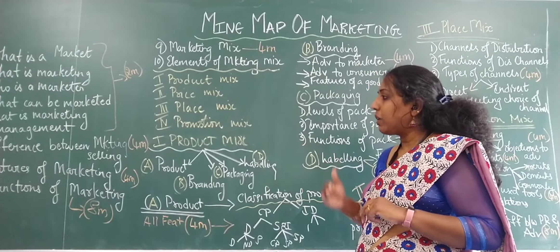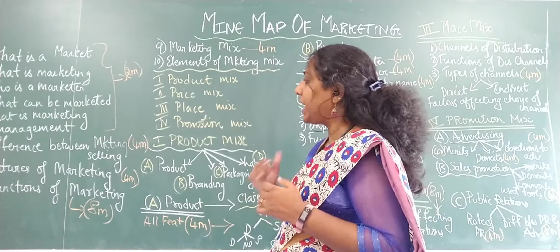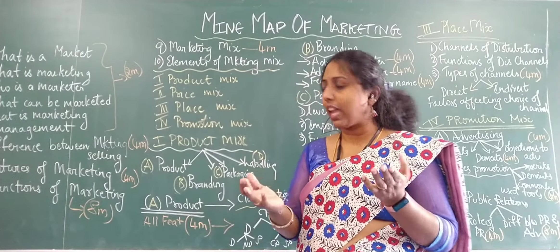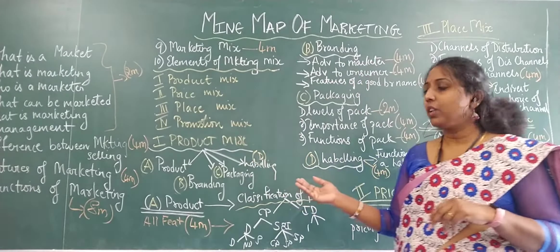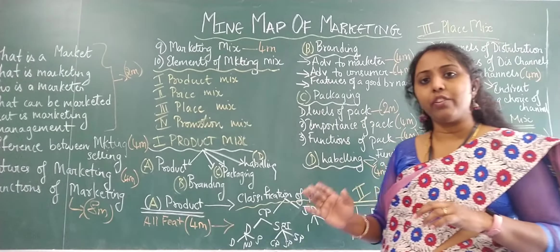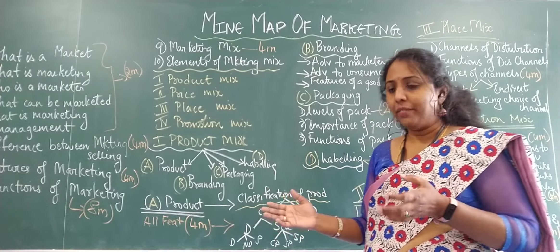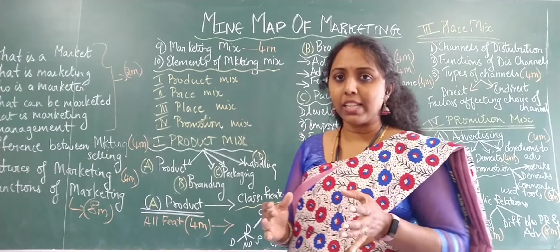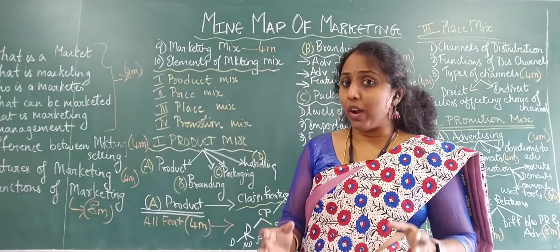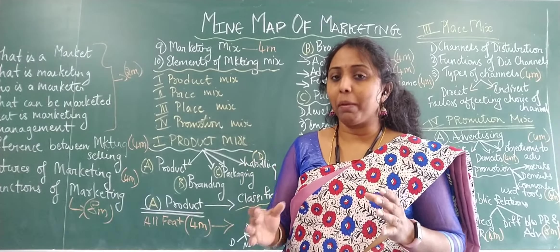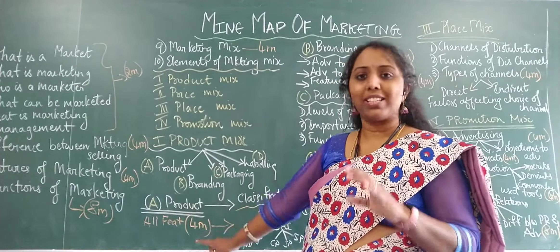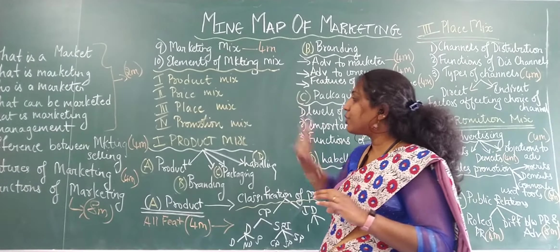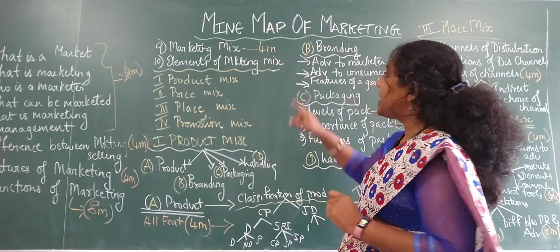Coming down to the four-mark questions, we have the difference between marketing and selling — you need to write four differences between both. Then you have features of marketing for a four marker, which is very easy. Then you have functions of marketing, which usually comes for eight marks and is very important because most question papers have had that question. I'll tell you where exactly the division of the chapter starts.